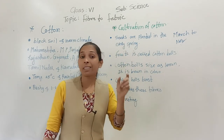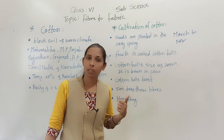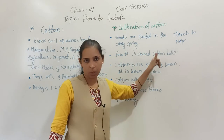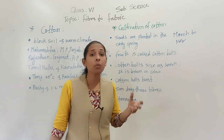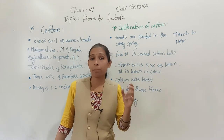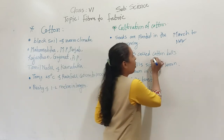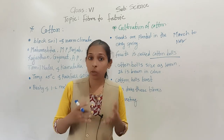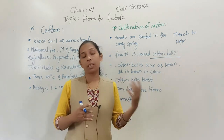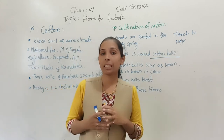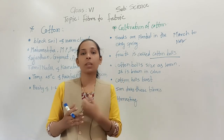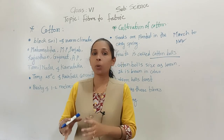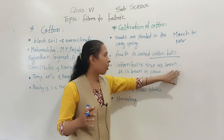The cotton seeds are planted early in the spring. The fruit of the cotton plant is called cotton bolls. Cotton bolls grow slowly and steadily, and after a certain period of time we can see seeds inside the bolls and cotton fibers around the seeds. The fully mature cotton bolls are almost the size of a lemon.